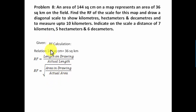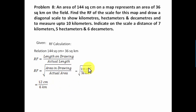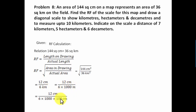We put 144 square centimeters in the numerator and 36 square kilometers in the denominator. Taking the square root: 144 becomes 12, 36 becomes 6, centimeter square becomes centimeter, and kilometer square becomes kilometer. Converting kilometers to centimeters — 1 kilometer equals 1000 meters, and 1 meter equals 100 centimeters — it works out to 1 over 50,000. This is a clear indication that the actual length has been reduced by a factor of 50,000.